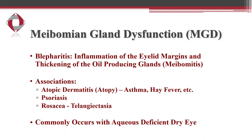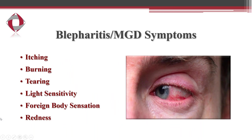Meibomian gland dysfunction is characterized by blepharitis, which is inflammation of the oil-producing glands. This is commonly associated with atopic dermatitis, psoriasis, and very commonly rosacea. Blepharitis symptoms include itching, burning, tearing, light sensitivity, foreign body sensation, and redness. The patient in this photo is a good example of blepharitis — you can see the eyelid margins are red and inflamed, there's debris accumulating along the lid margins, and the eye itself is really red and inflamed.